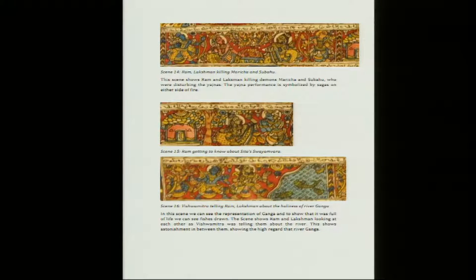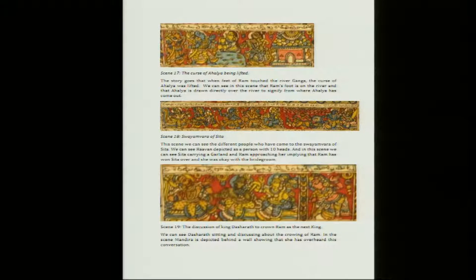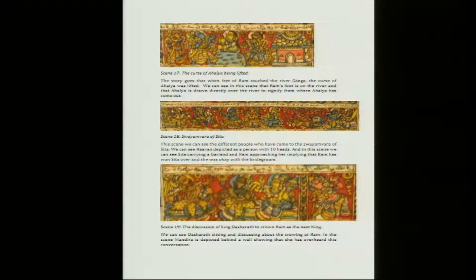It is a water body which has lots of prosperity to it — almost the source of life — with a simplified depiction. The scene shows Ram and Lakshman looking at each other as Vishwamitra was telling them about the river, showing astonishment and the high regard that river Ganga had for them. The story goes on with the curse of Ahalya being lifted. When the feet of Ram touched the river Ganga, there was a stone — Ahalya was the lady who had been turned into stone — and when they touched the stone, the curse of Ahalya was lifted.